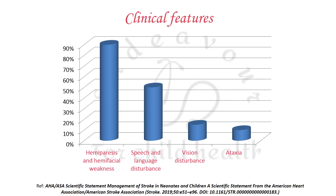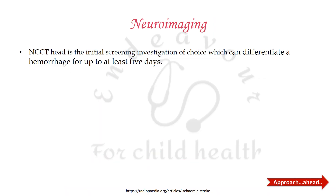Looking at the clinical features of childhood stroke: hemiparesis and hemifacial weakness are found in up to 90% of cases, speech and language disturbance in up to 50% of cases, vision disturbances in around 20% of cases, and ataxia in 15 to 18% of cases of childhood stroke.